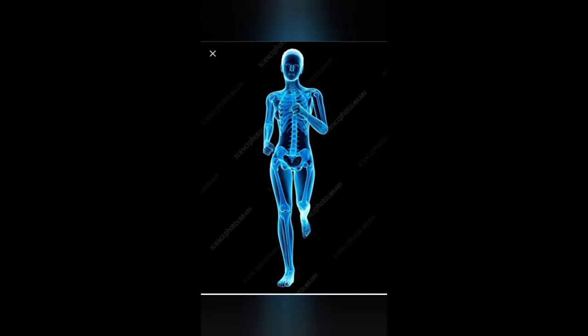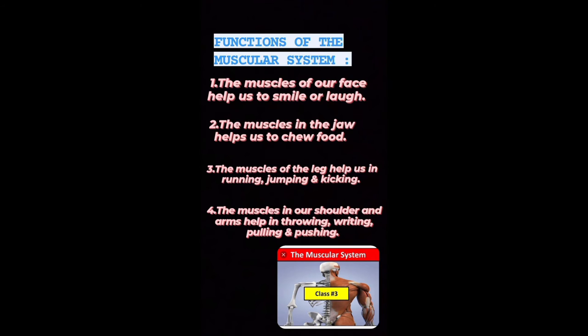There are more than 600 muscles in our body. Some functions of the muscular system: number one, the muscles of our face help us to smile or laugh; number two, the muscles in the jaw help us to chew food; number three, the muscles of the leg help us in running, jumping and kicking; number four, the muscles in our shoulder and arms help in throwing, writing, pulling and pushing.